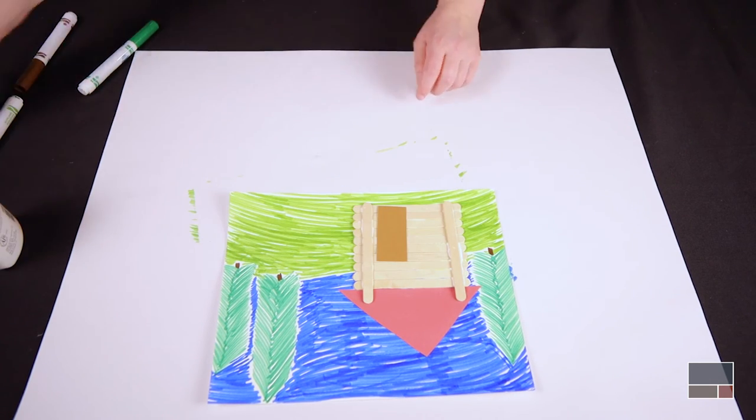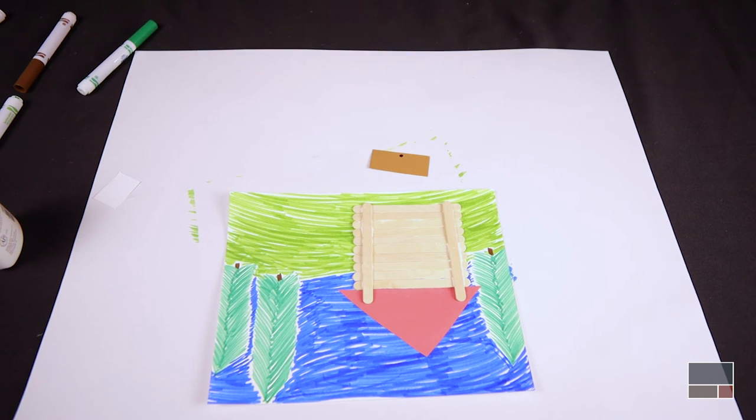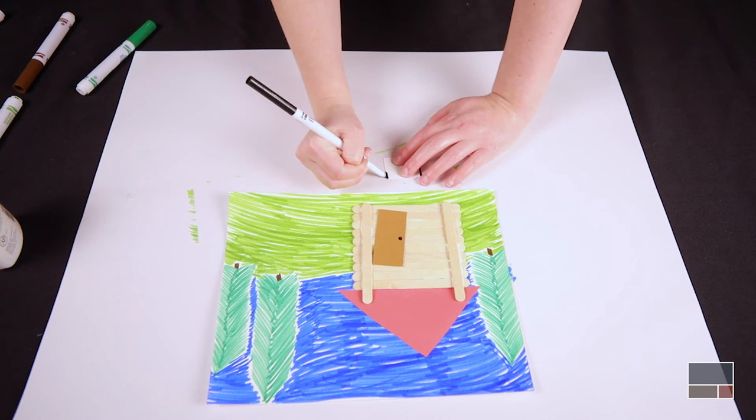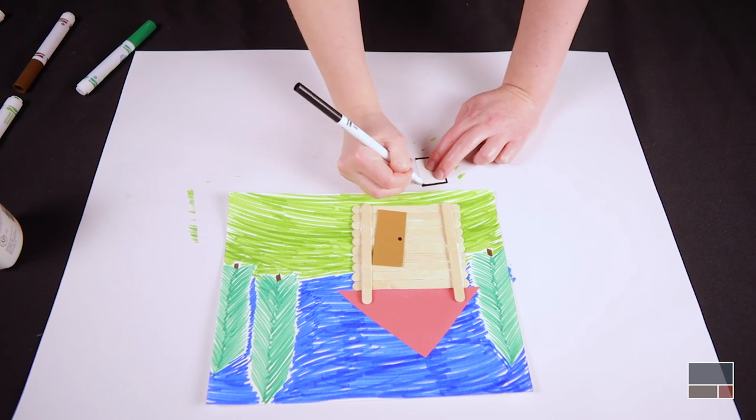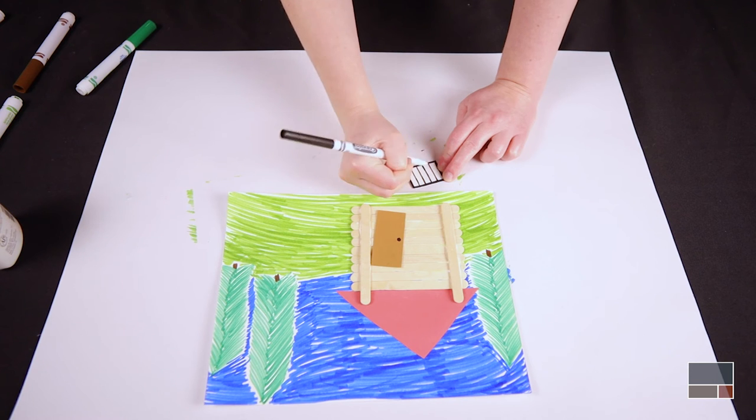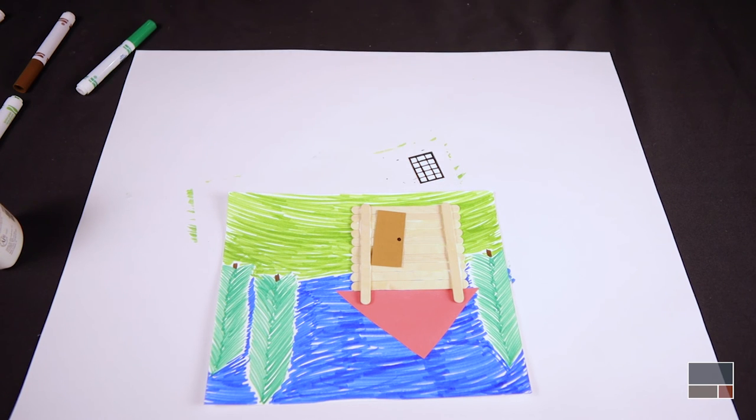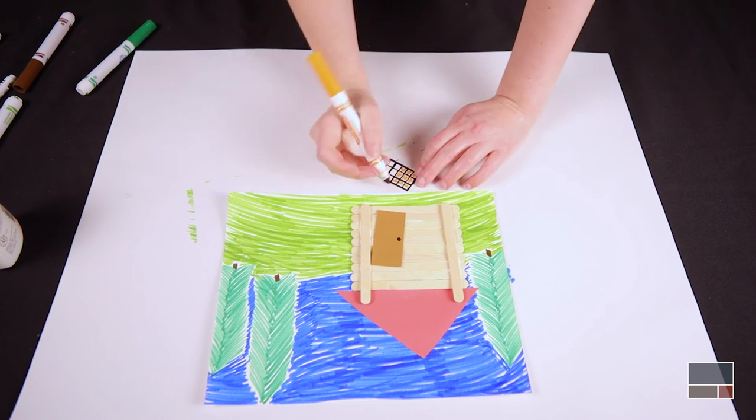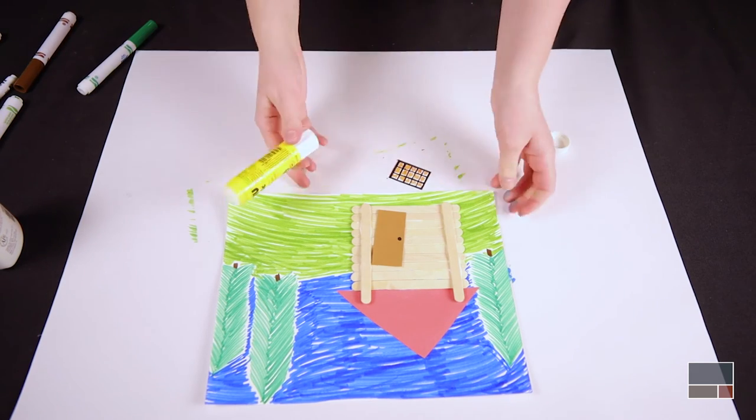Use the paper provided or your own paper to create a door and a window for your lodge. Glue your door and window to the front of your lodge.